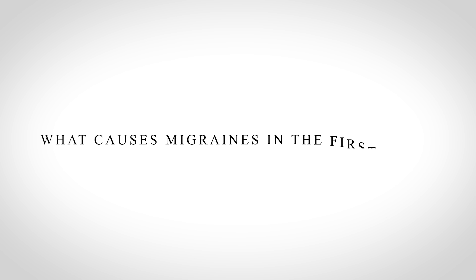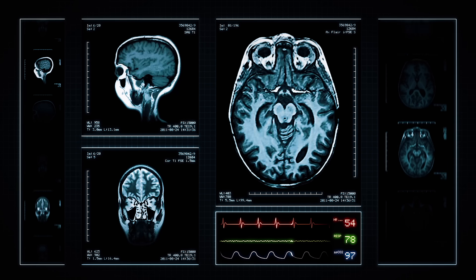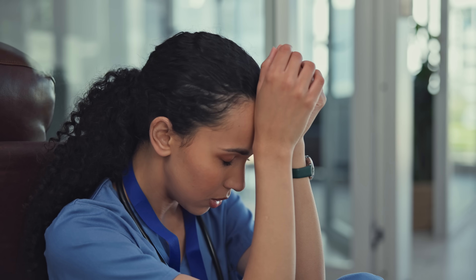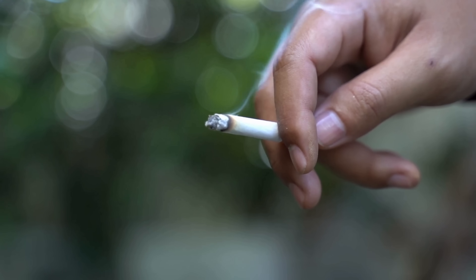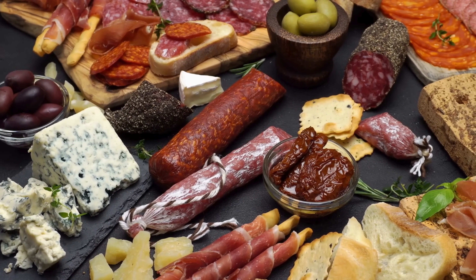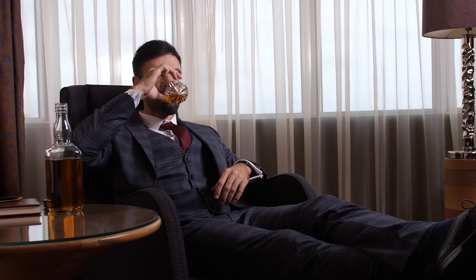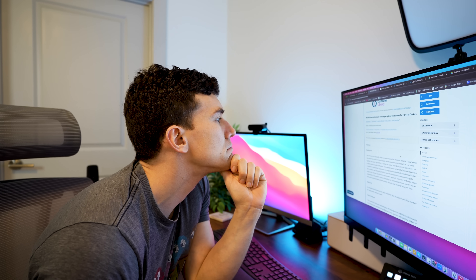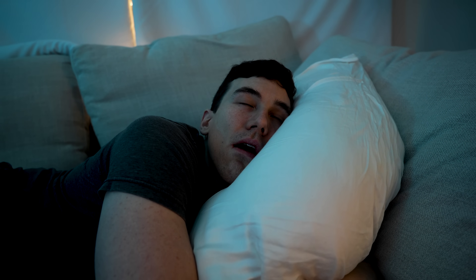What causes migraines in the first place? Unfortunately, medical science still hasn't figured out exactly what causes migraines, but we do know many common triggers. These include emotional stress, lack of sleep or poor sleep quality, hormonal changes, strong smells such as cigarette smoke, certain foods like aged cheeses, processed meats, smoked meats, and even caffeine and alcohol. One major trigger I only recently became aware of is neck position and posture — sitting at a computer for long periods in poor posture, or sleeping with my head in a weird position, can trigger my migraines.